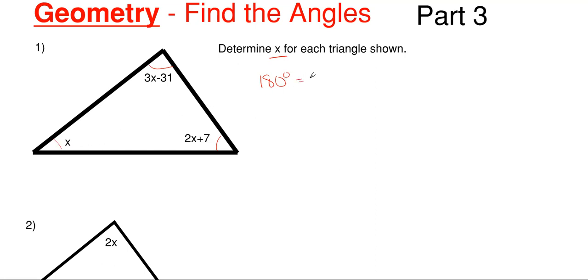So we would have 180 degrees is equal to x plus that top angle of 3x minus 31 plus that bottom right angle of 2x plus 7. What we can do is that we can add all our x variables together. So we would have 180 is equal to x plus 3x, which is 4x plus another 2x, gives us 6x, and then we would have minus 31 plus 7 gives us a minus 24.